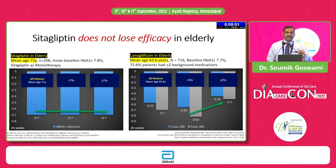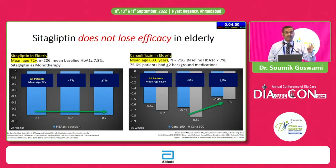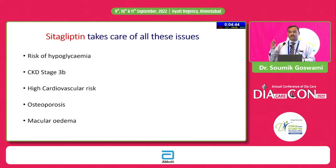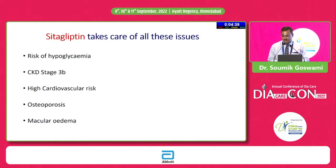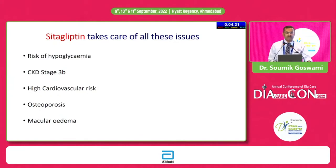I want to make it clear that I have nothing against SGLT2 inhibitors — in this very patient, the first drug after metformin should be an SGLT2 inhibitor. But it will not help her attain her blood glucose targets; it will give cardiorenal benefits irrespective of blood glucose levels. So the next drug which needs to be added to take care of all these issues would be a gliptin, and Sitagliptin would be an excellent choice.